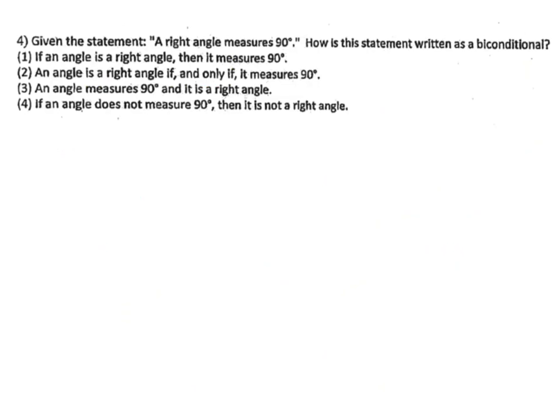On number 4 — given the statement 'a right angle measures 90 degrees,' how is the statement written biconditionally? Biconditionally means I am looking for the words 'if and only if.' The answer is: 'An angle is a right angle if and only if it measures 90 degrees.' That will be our answer, choice number 2.